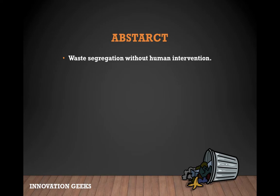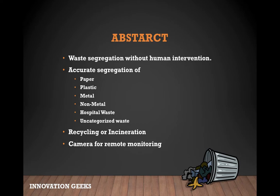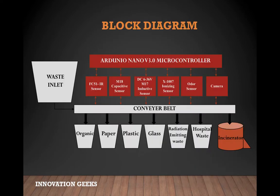The automated waste segregator uses sensors so that human intervention is completely avoided. It ensures accurate segregation of waste into categories like paper, plastic, metal, non-metal, hospital waste, and uncategorized waste. These waste products are further sent for recycling or incinerated without eliminating any hazardous gases into the atmosphere. A camera is installed in the system that helps remote monitoring and intervention in the waste sorting process. The prototype can be installed at every organization on a smaller scale or in waste dump sites on a larger scale, so as to perform efficient segregation of waste without human intervention.